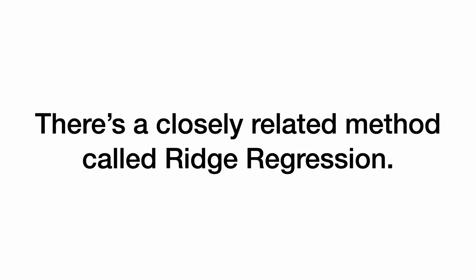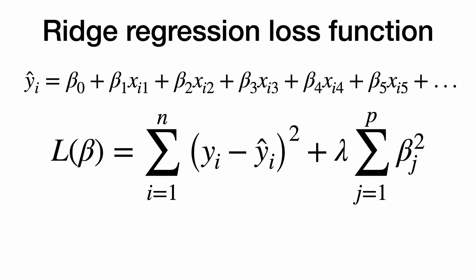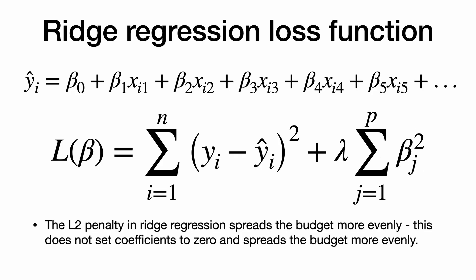Now there's a closely related method called ridge regression, but I don't want you to get these two confused. Ridge regression uses a different penalty where we square the terms. The L2 penalty in ridge regression spreads the budget a little bit more evenly. This does not set coefficients to zero. The coefficients will be shrunk because we're penalizing large coefficients, but they will not go to zero. It's still shrinkage without variable selection.